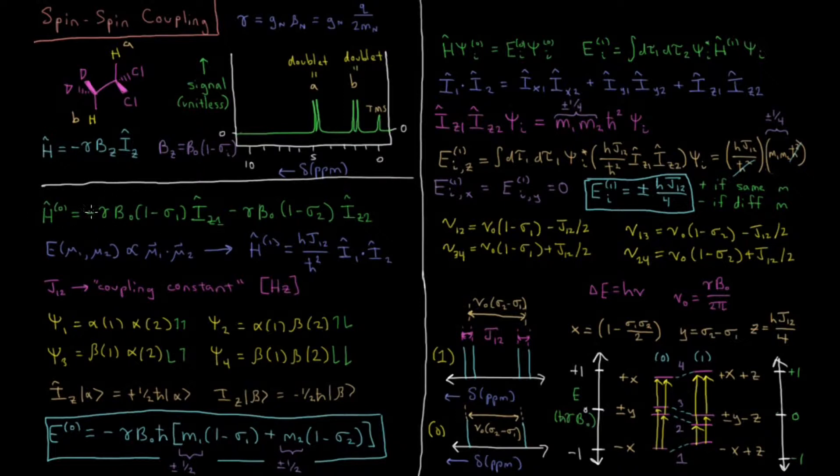So the first Hamiltonian is minus gamma magnetic field, one minus shielding constant, times the magnetic operator in the z direction. So spin angular momentum in the z direction. Minus same thing for nucleus two here, sigma two.